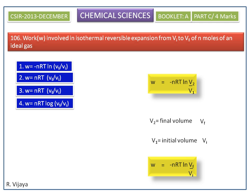This equation resembles the first option. So, the first option is the correct answer. Work done in isothermal reversible expansion from VI to VF of N moles of an ideal gas is W is equal to minus nRT ln VF divided by VI.